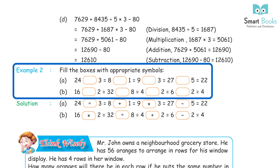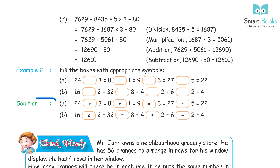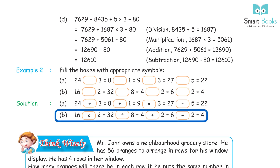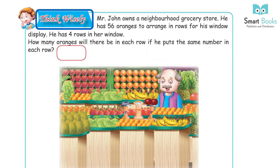Example 2 — fill the boxes with appropriate symbols. Solution: A) 24÷3 = 8, 8 + 1 = 9, 9×3 = 27, 27 − 5 = 22. B) 16×2 = 32, 32÷8 = 4, 4 + 2 = 6, 6 − 2 = 4.